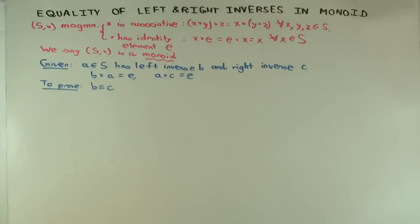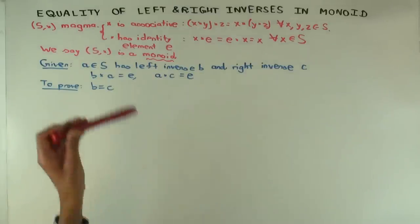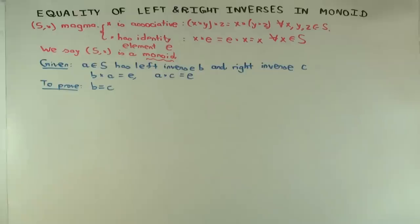What's the additional axiom you need to make a group? Every element has a what? What's the third thing in groups? Multiplicative inverse, yeah.